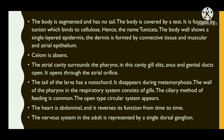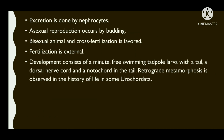The ciliary method of feeding is common. The circulatory system is of open type; the heart is abdominal and reverses its function from time to time. The nervous system in the adult is represented by a single dorsal ganglion. Excretion is done by nephrocytes. Sexual reproduction occurs by budding; the animal is bisexual and cross-fertilization is favored. Fertilization is external. Development consists of a minute free-swimming tadpole larva with a tail, a dorsal nerve cord, and a notochord. Retrograde metamorphosis is observed in the life history of some urochordates.